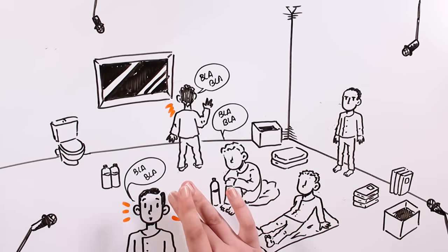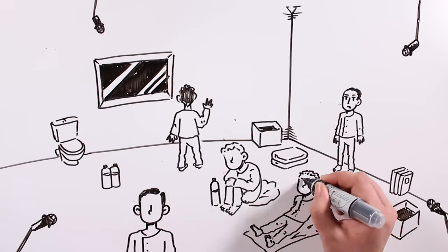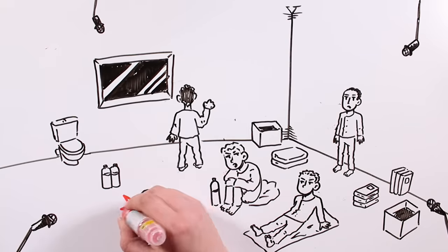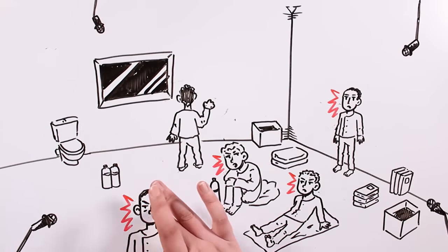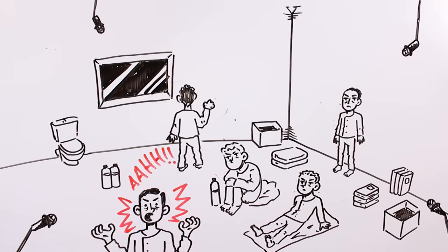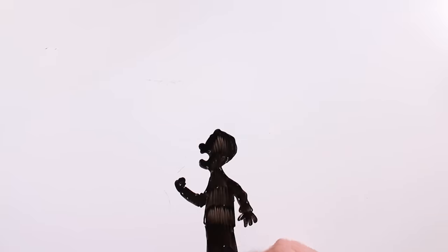The subjects started to suspect one another and act in a strange way. Researchers considered their behavior was a result of the experimental gas. On the 9th day, one of the subjects started to scream for 3 hours. When he kept silent, researchers found out he had cut his vocal cords.